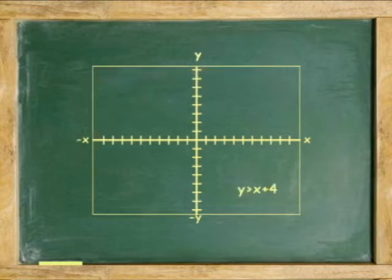For example, in graphing the inequality y is greater than x plus 4, first we plot the boundary line by recognizing that the slope of the line is 1, the coefficient of x, and the y-intercept is 4. Here is the graph.